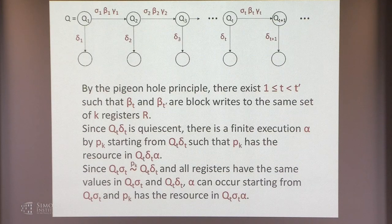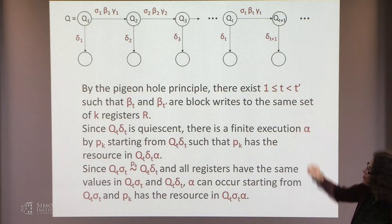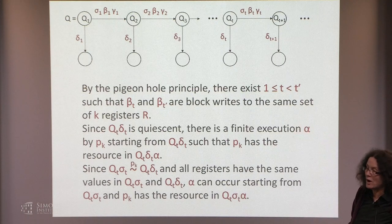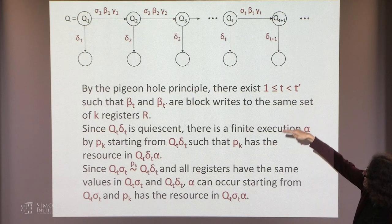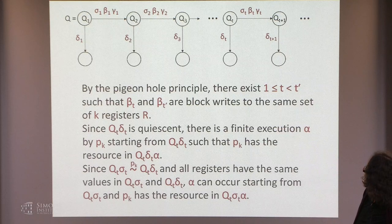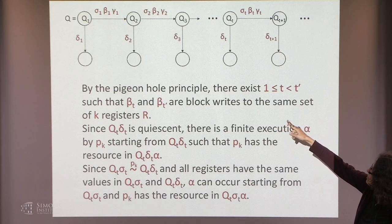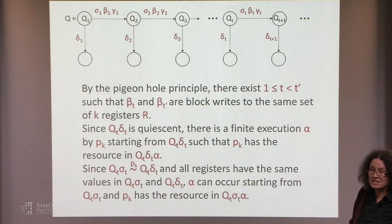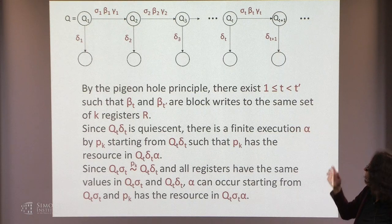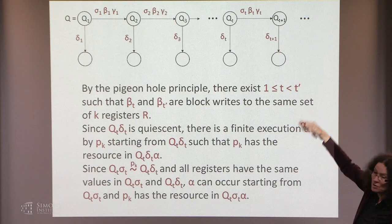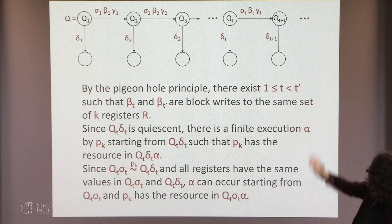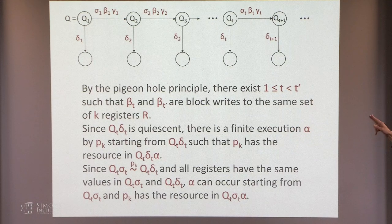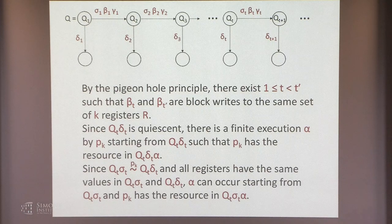We start with Q being Q1, apply this construction, getting delta_1 going down to quiescent, and sigma_1, beta_1, gamma_1 going to another quiescent configuration Q2. From Q2, again we have delta_2, sigma_2, beta_2, gamma_2. We can do what we just did over and over again.